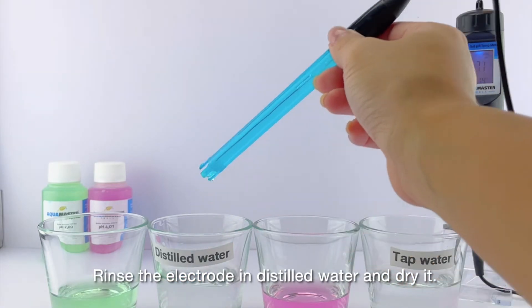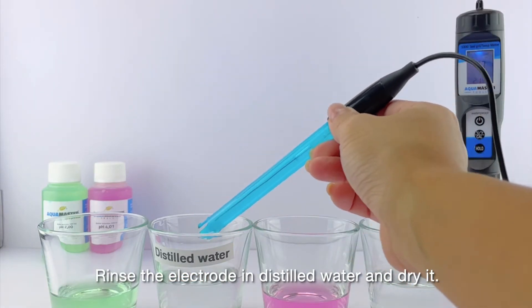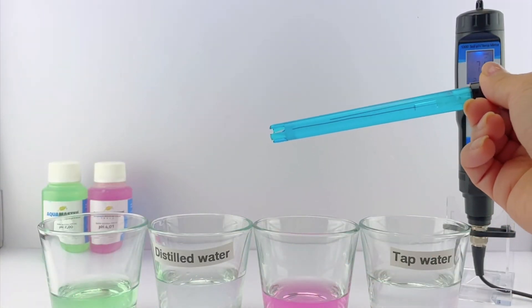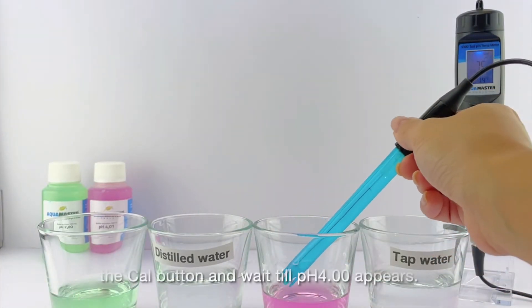Rinse the electrode in distilled water and dry it. Place the electrode in the pH 4.